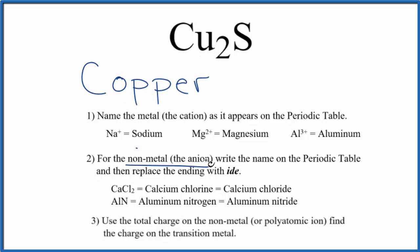Next, we'll write the name for the nonmetal, the anion or the negative ion, as it appears on the periodic table, but we're going to change the ending to ide. So for sulfur, we're going to get rid of the UR and write ide. So far, we have copper sulfide.